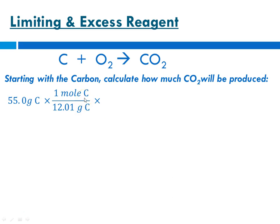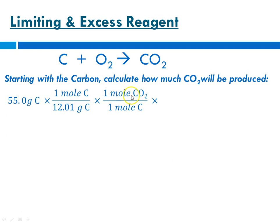Now we're at moles of carbon, and we need to use the mole ratio in order to get to moles of carbon dioxide. There's a 1-to-1 ratio: for every 1 mole of carbon, you get 1 mole of carbon dioxide. When we set up our mole ratio, we want the unit we want — moles of carbon dioxide — in the numerator, and the unit we're getting rid of — moles of carbon — in the denominator.